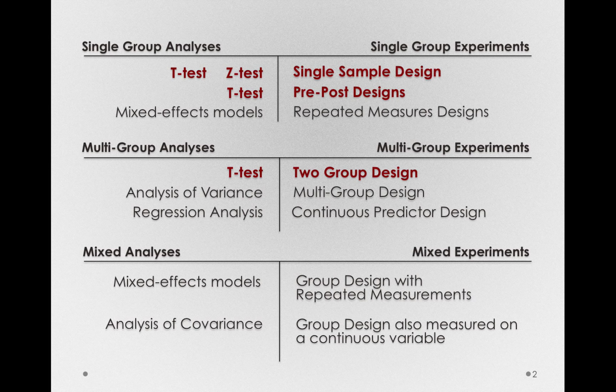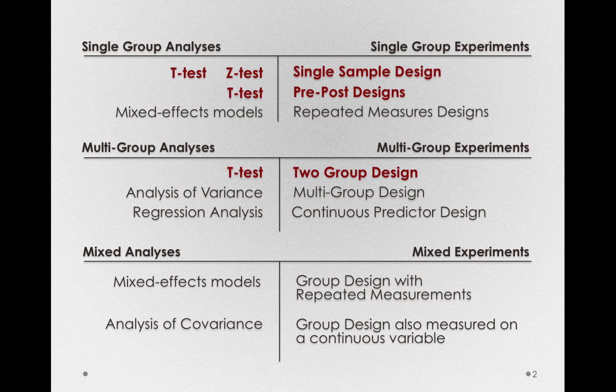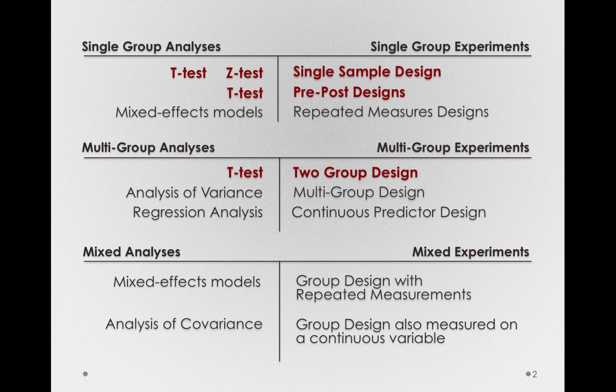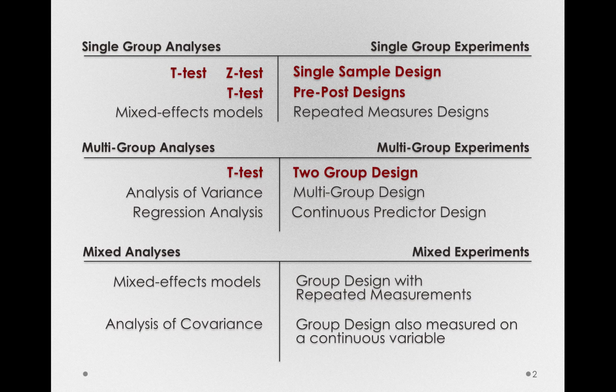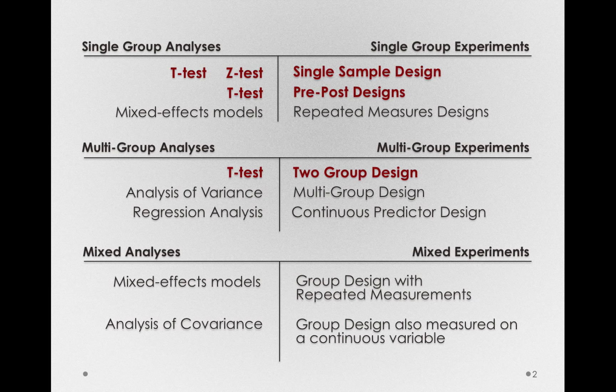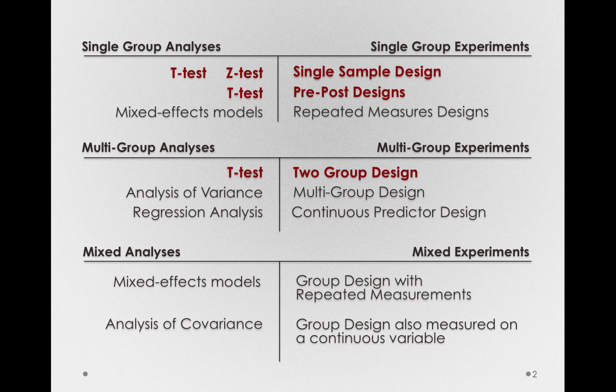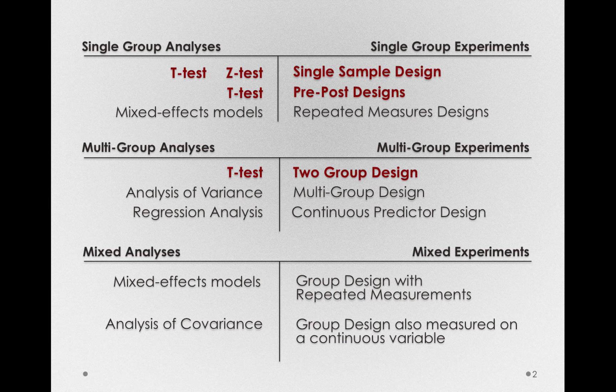Our t-test removed the need to know the population variance when we performed a single sample experiment. It also removed the need to know a population mean before treatment when we did a pre- and post-design or a two-group design. But there's many other ways we can measure the world and we'll need inferential methods that allow us to make those inferences about the populations.